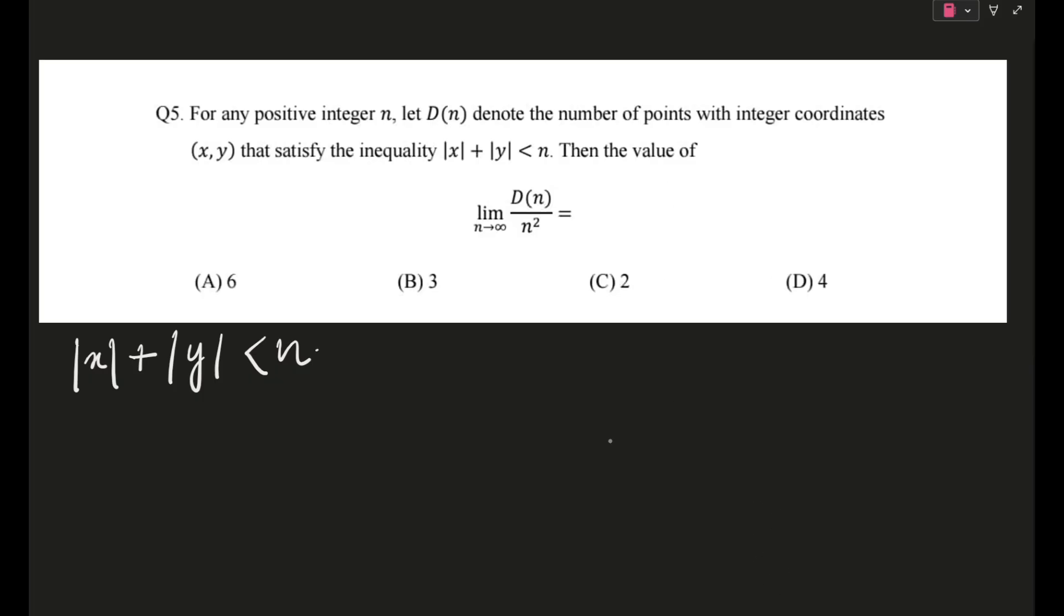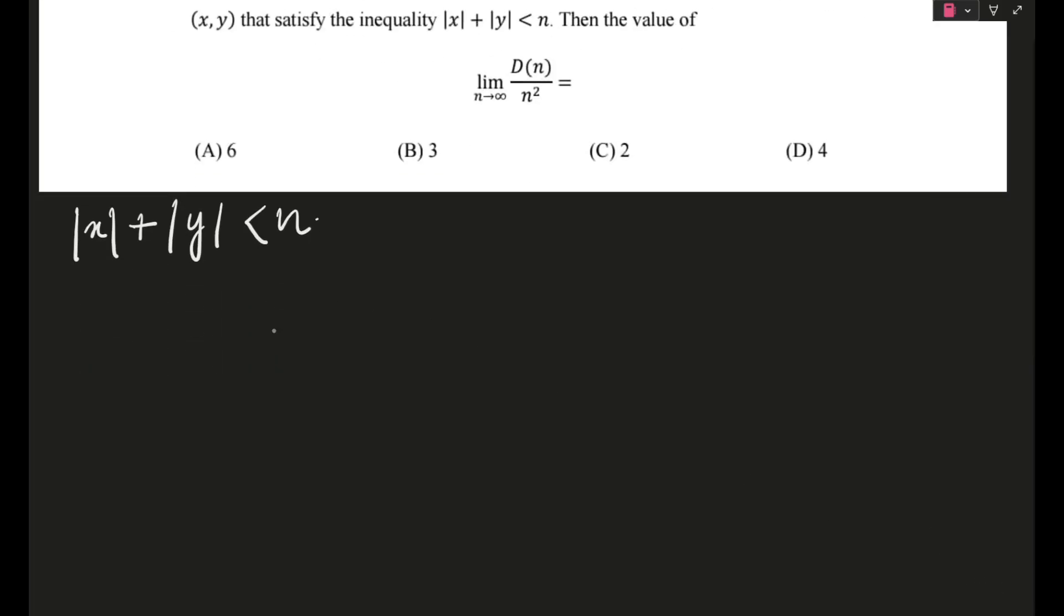We have to find the value of limit n tends to infinity D(n)/n². For actually solving this, what I will be doing is fixing x. So let's set k = |x|, where k is a constant value which belongs to {0, 1, 2, ..., n-1}. Because |x| + |y| < n, it will not include n but will include till n-1.